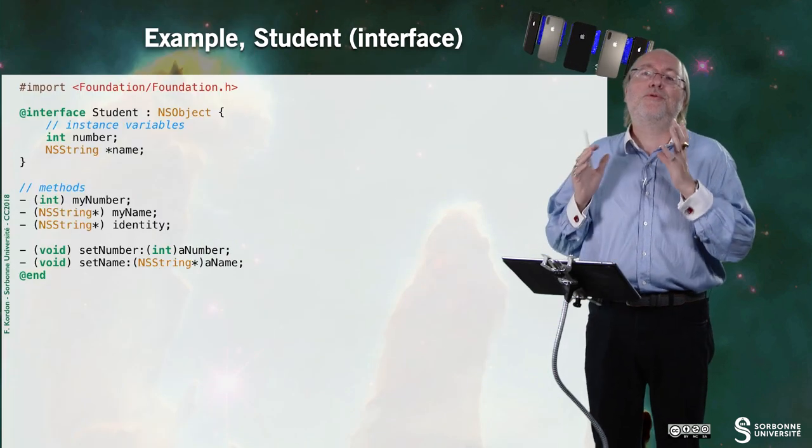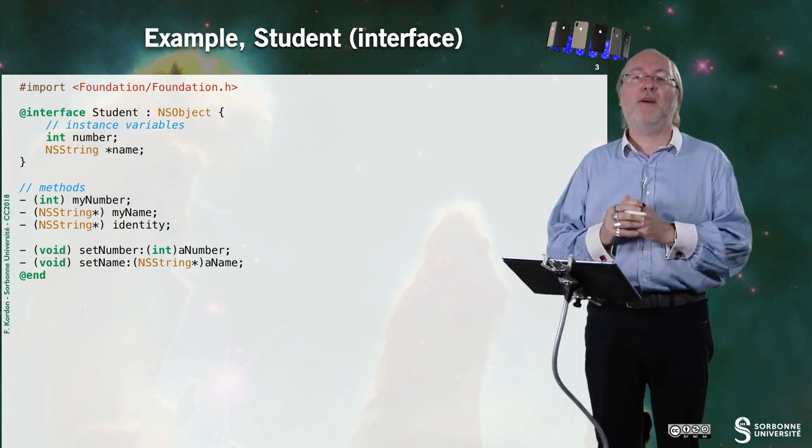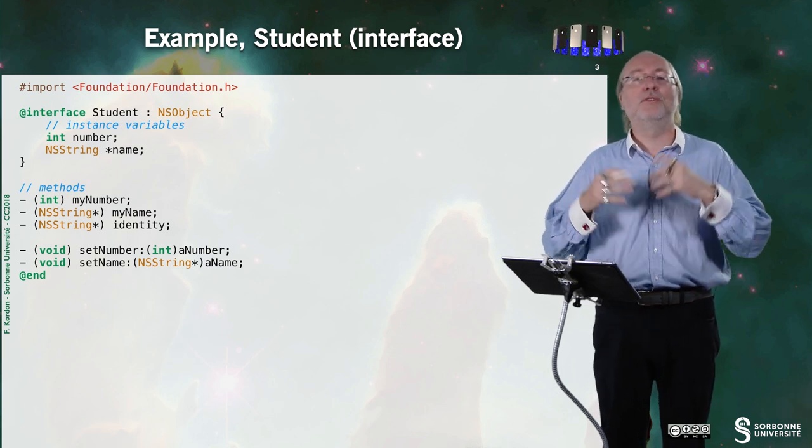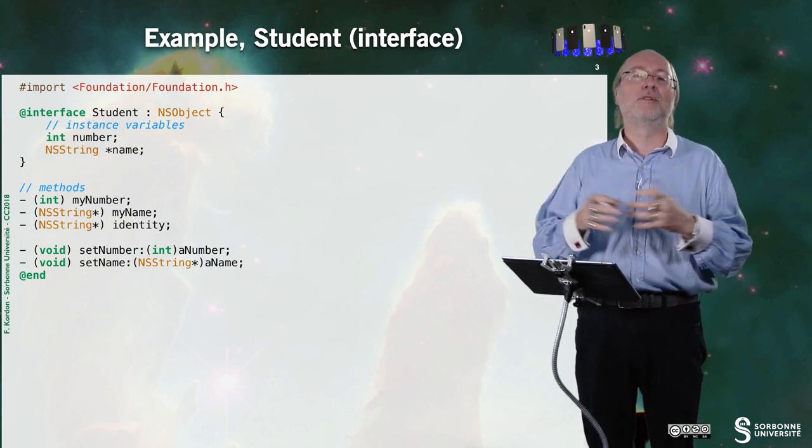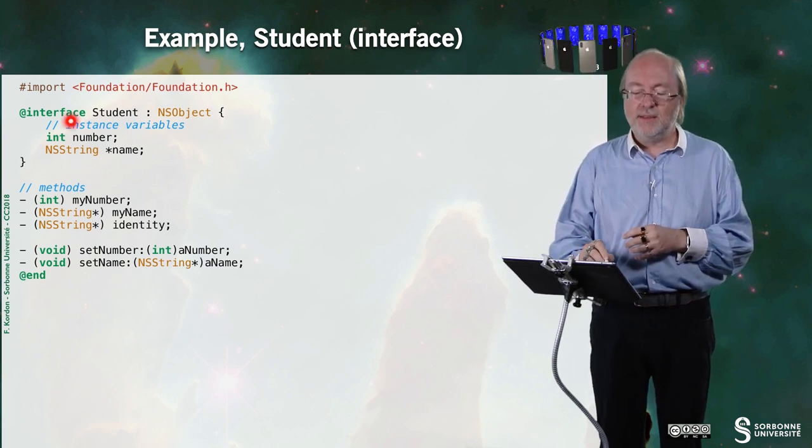Let's have a look at the first example. Here, this is the interface of a class called Student, that is stored in a file called Student.h. In this interface, I define here two instance variables: a number, which is an integer, and a name, which is NSString.